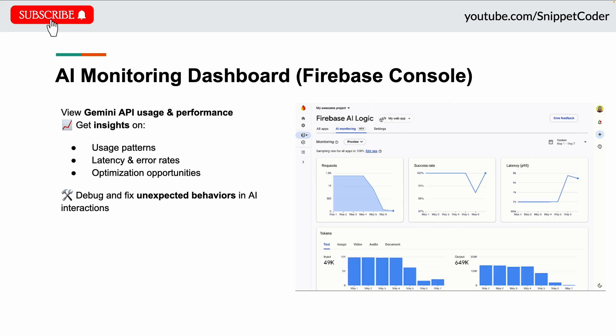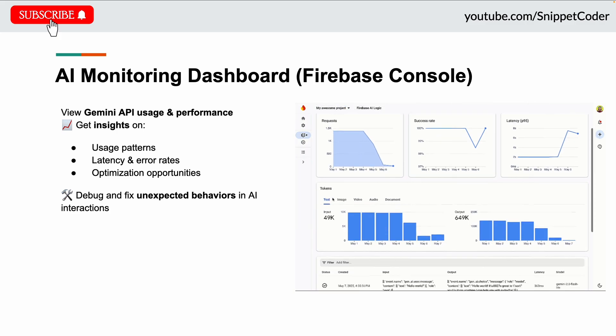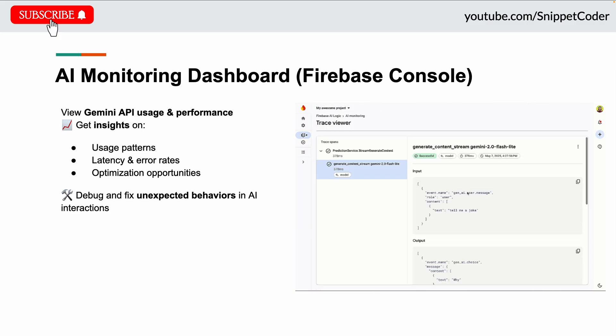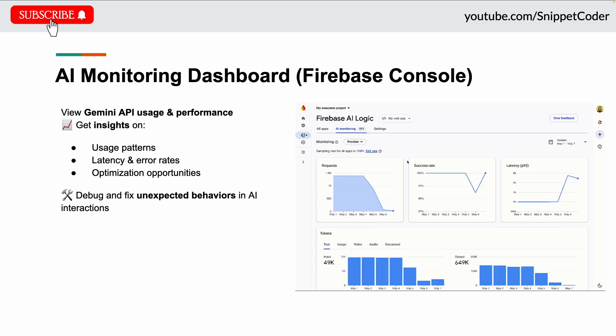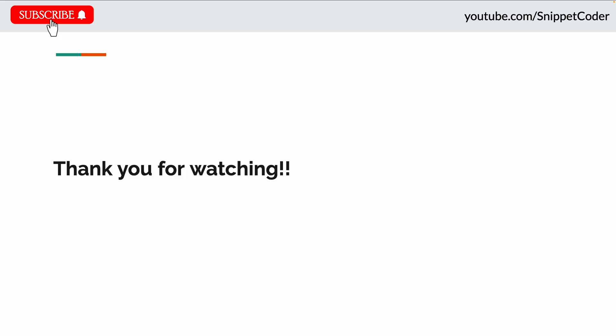To help manage it all, Firebase now includes an AI monitoring dashboard. It provides detailed insights into Gemini API usage, latency, error rates, and consumption optimization opportunities, and helps debug issues and refine your AI integration. That's everything new in Flutter 3.32 — make sure to update your SDK and try out these features.